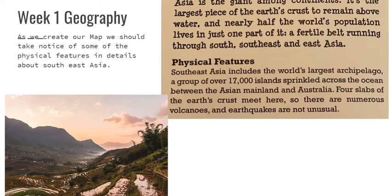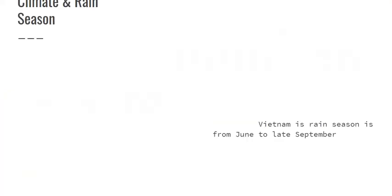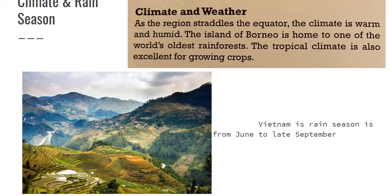Asia is a giant among the continents, as you see here in the picture of the valley of Vietnam. The physical features are very important. We see the carved-out lakes and mountains seen here. Right now, Vietnam is in rain season from June to late September, and it is warm, which is excellent for growing crops such as rice.